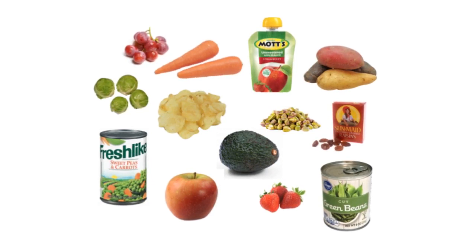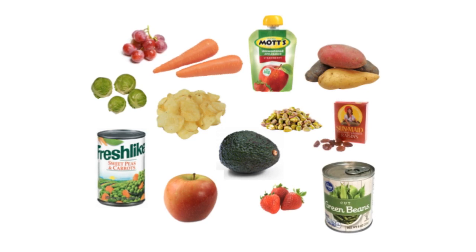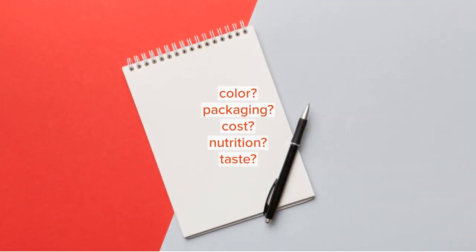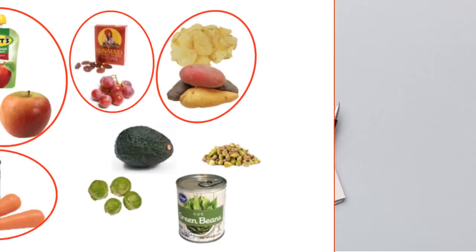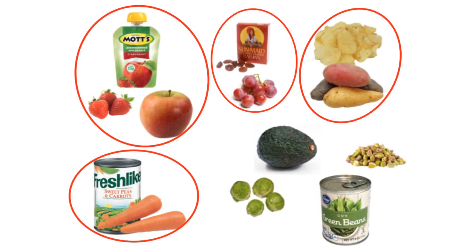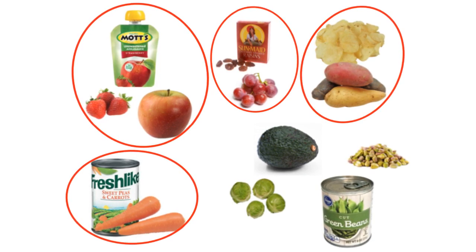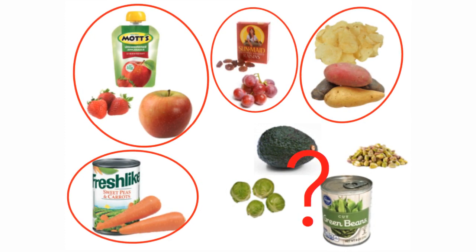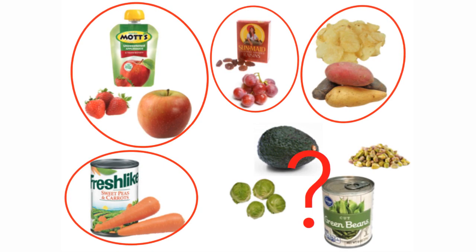Imagine you were given a bag of food items and asked to put them in logical categories. What criteria would you use to organize these items? Maybe you would start by putting items with the same ingredients together. But with this scheme, you would end up with a bunch of extra items that have nothing in common except the color green.